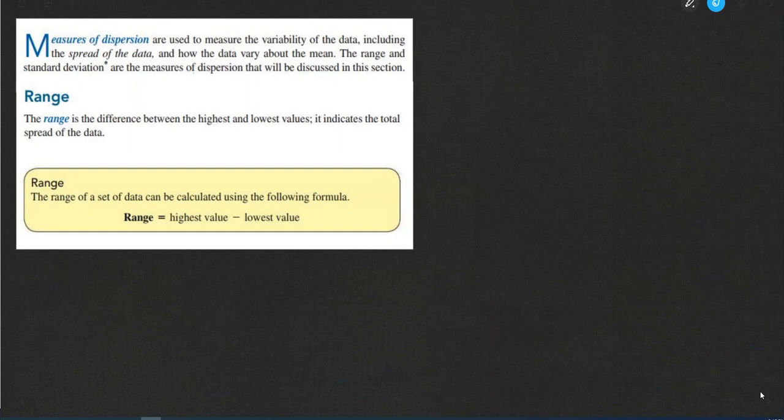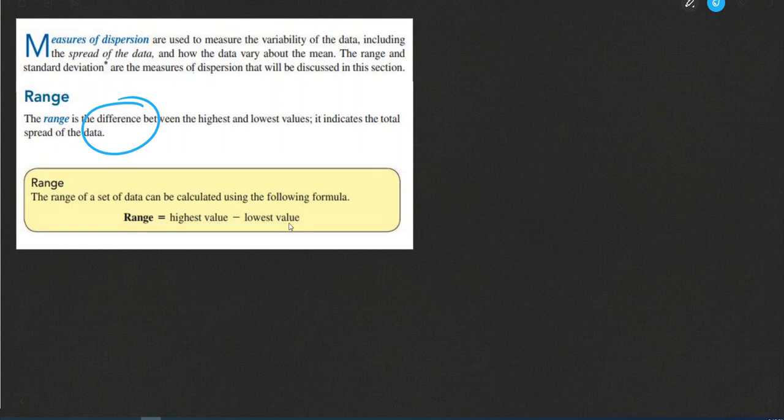To start with, we'll look at range. Range is the difference between the highest and lowest values. It indicates the total spread of the data. You could think of it as where the data ranges from, from here to here, and we're going to look at how big that range is, how big the spread is from the lowest to the highest. So simply put, it's just the difference, or in other words, you subtract the lowest value from the highest value to get the range. So of our two measures of dispersion that we're going to be looking at, range is by far the easiest of the two.